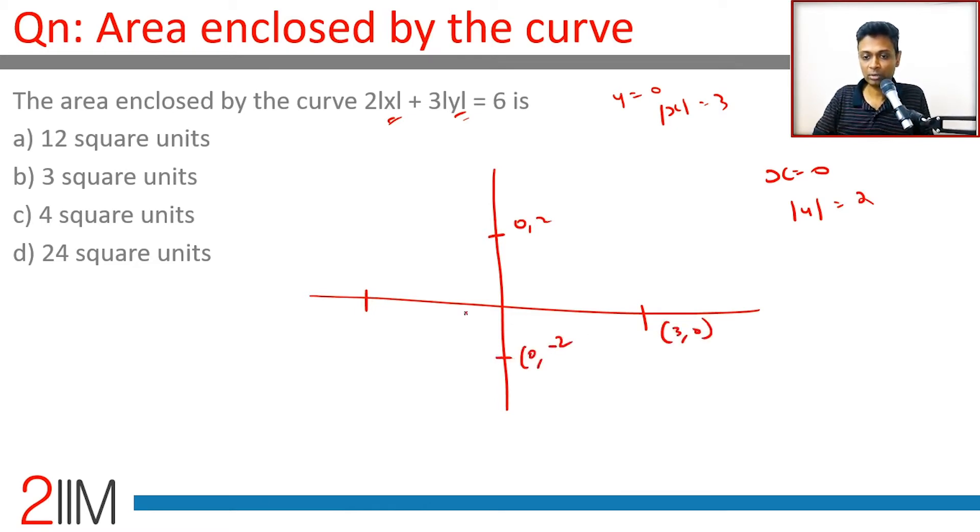When x and y are both positive, we think about 2x + 3y = 6. That is this line. The moment you draw this line, you know that x could be negative and y could be negative.